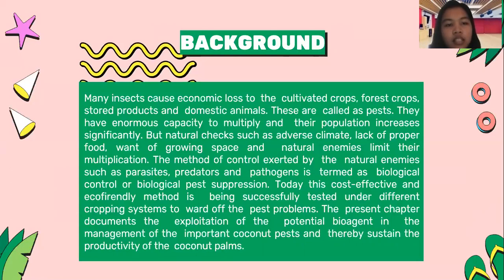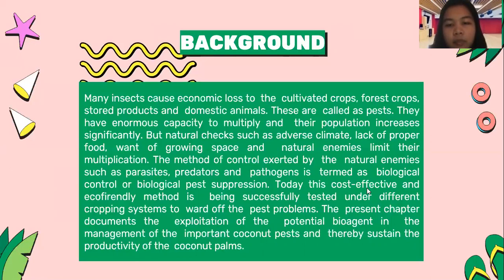The method of control enacted by natural enemies such as parasites, predators, and pathogens is termed as biological control or biological pest suppression. This cost-effective and eco-friendly method is being successfully tested under different cropping systems to work off pest problems. The present chapter documents the exploitation of potential bioagents in the management of important coconut pests to sustain the productivity of coconut.